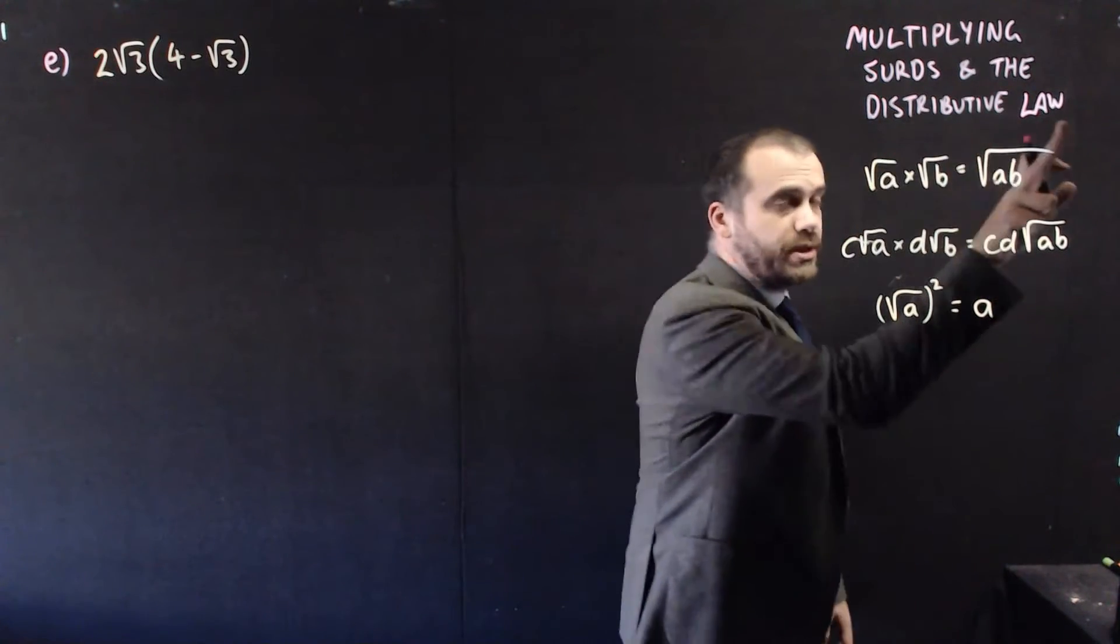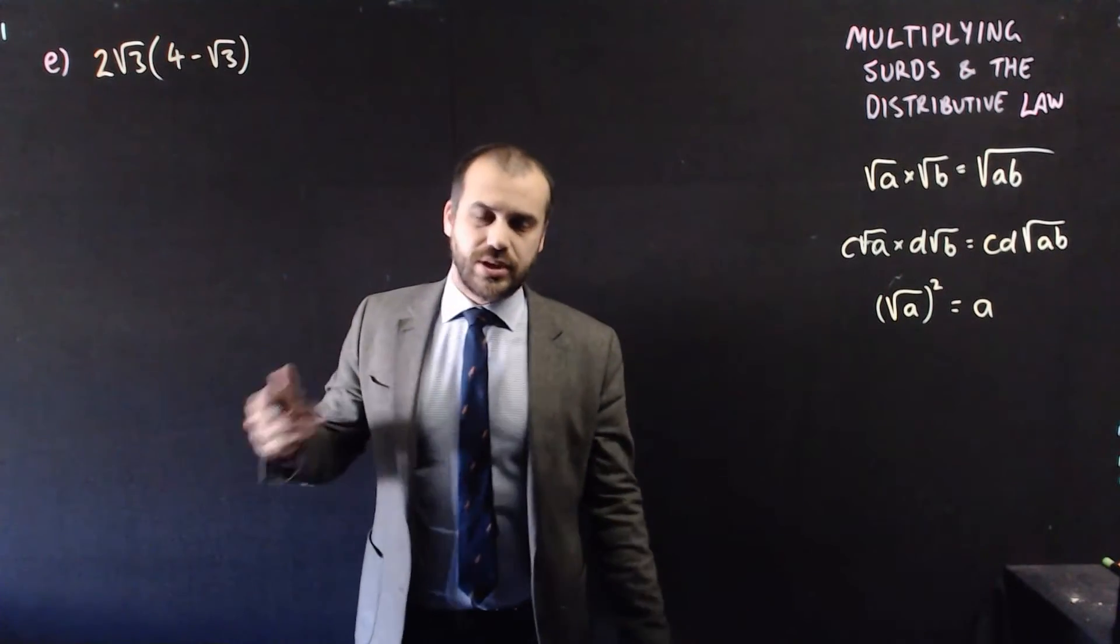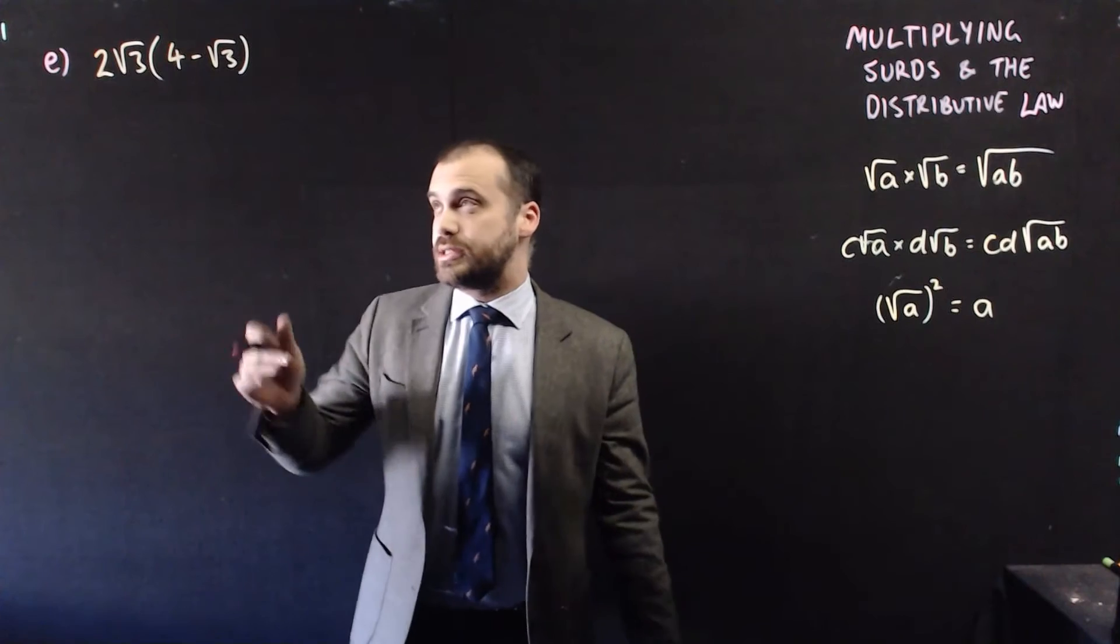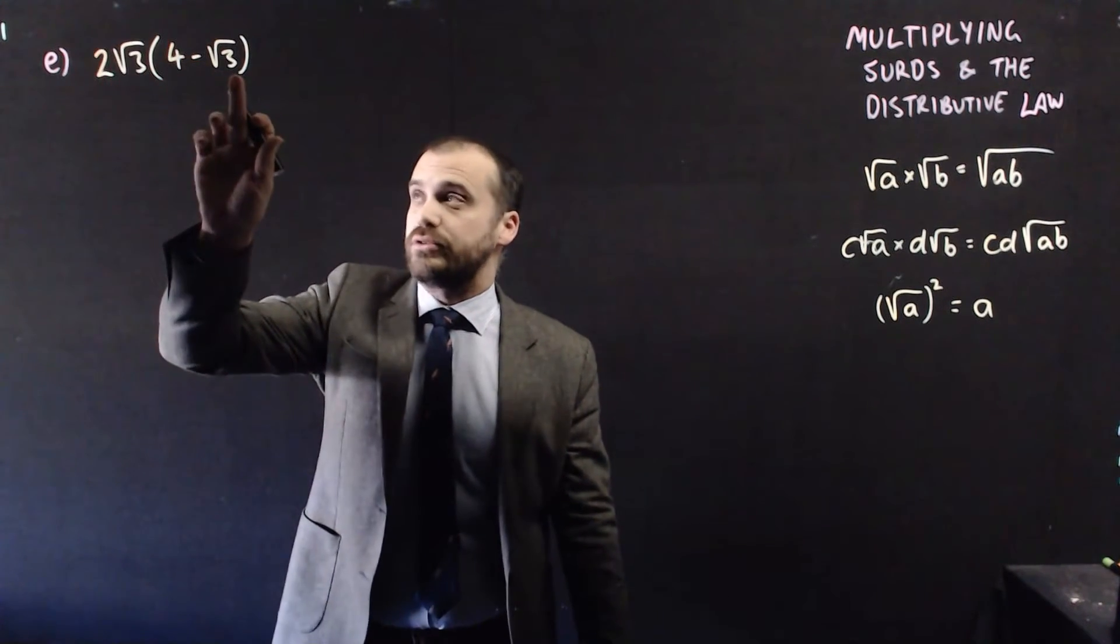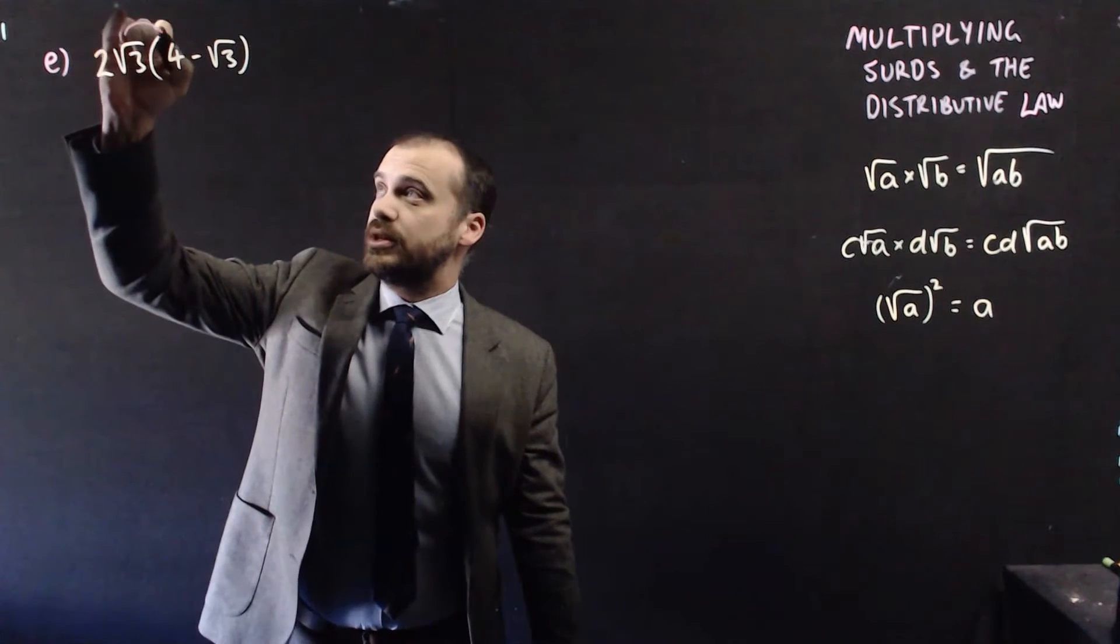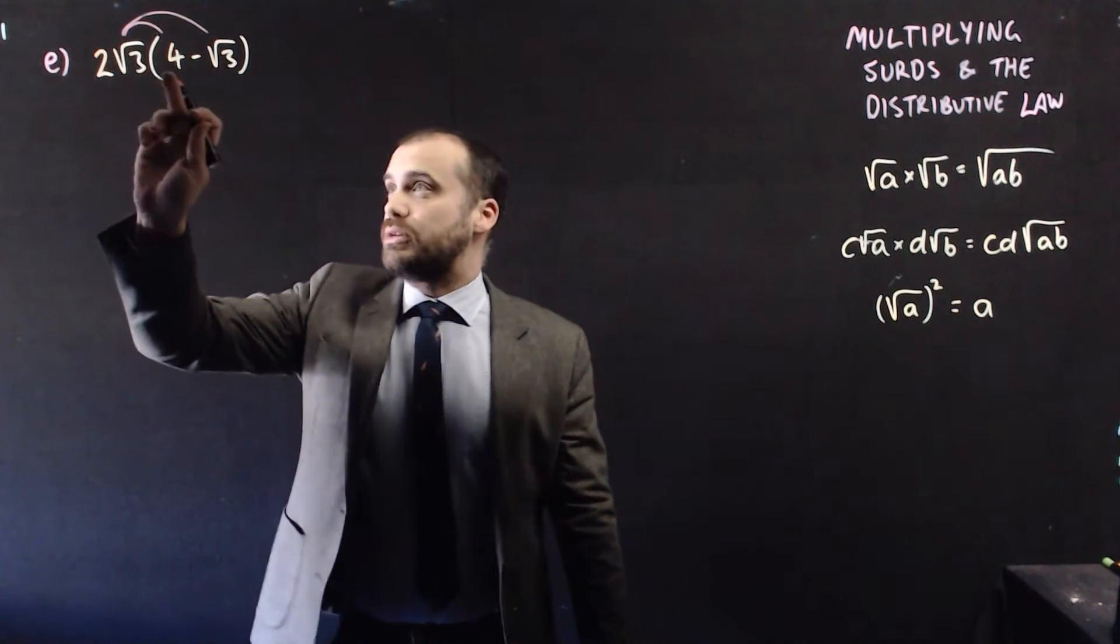So now that brings us to our distributive law, expanding brackets. Now these are just numbers, so they're going to behave the same way that you've expanded brackets in the past. 2 root 3 times 4 minus root 3. We're going to have to multiply this by this, and this by this. So, 2 root 3 times 4.